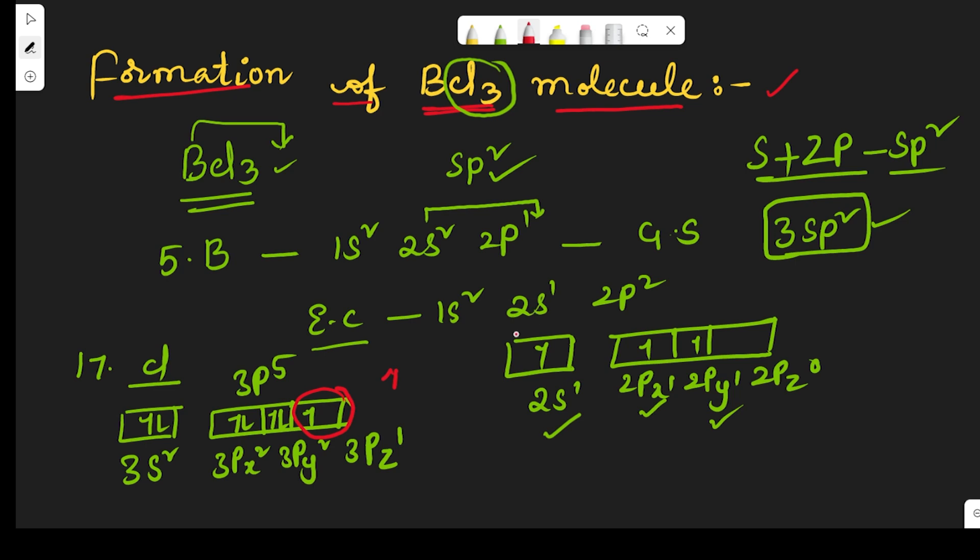Boron contains three sp² hybrid orbitals. These three hybrid orbitals will overlap axially with the three chlorine atoms and form BCl3 molecule.